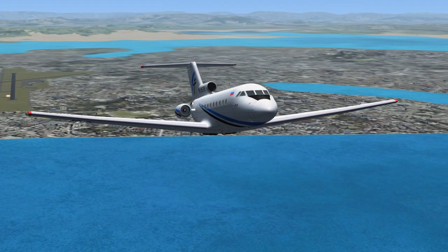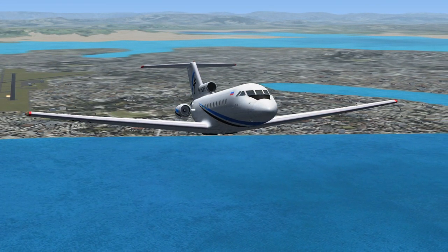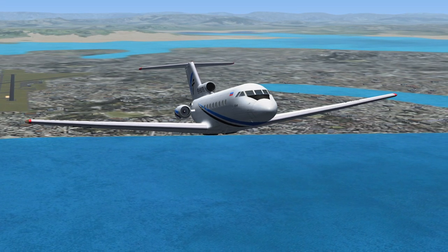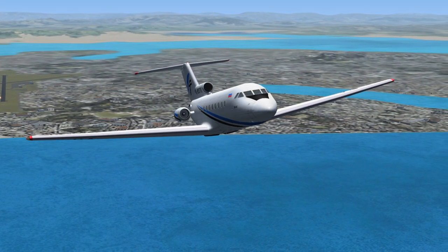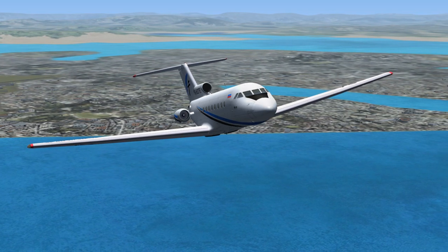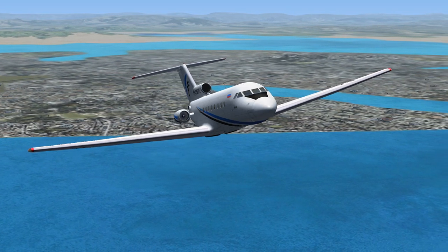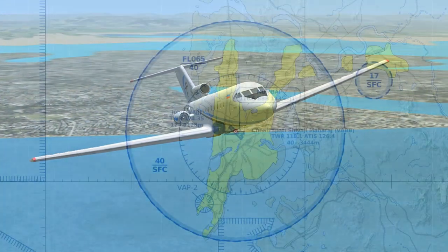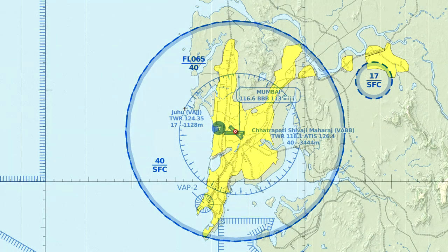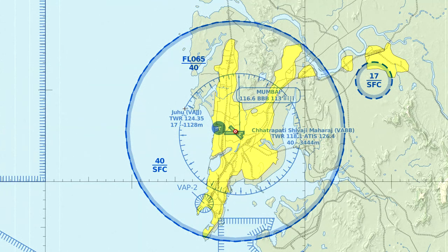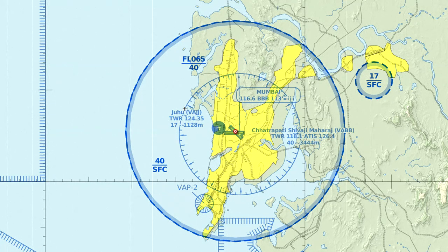Bryansk Air 276 to Mumbai radar. 276 is departing Mumbai to the west, climbing to 10,000. Transponder frequency 1243. Mumbai radar to Bryansk Air 276: Roger, continue your climb to 10,000. Proceed on course to Al Dhafra. Remain on Mumbai radar frequency. Transponder 1243.